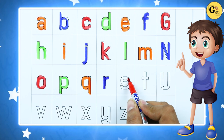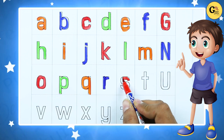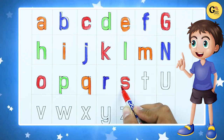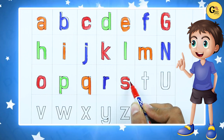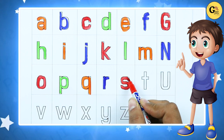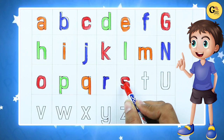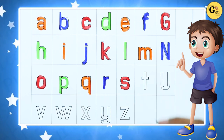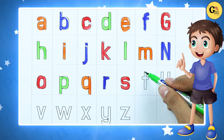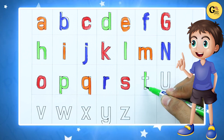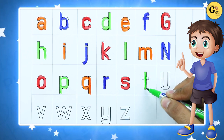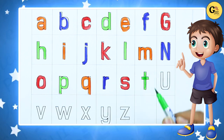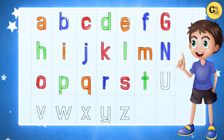S — S for sheep. With red color, S for sheep. Small t — T for tiger. It's small t with green color.